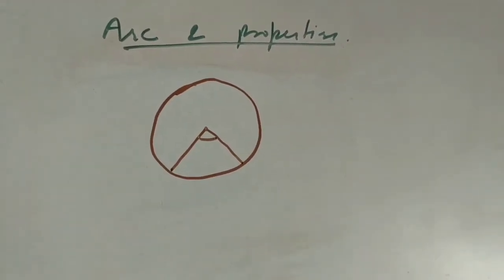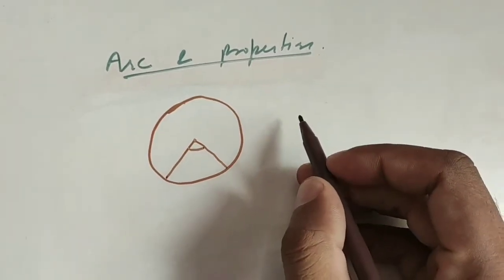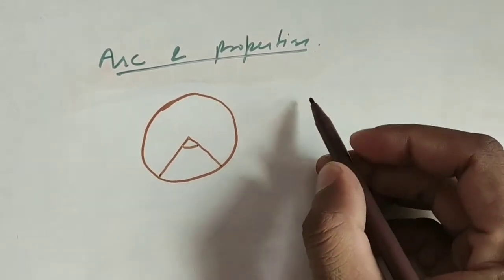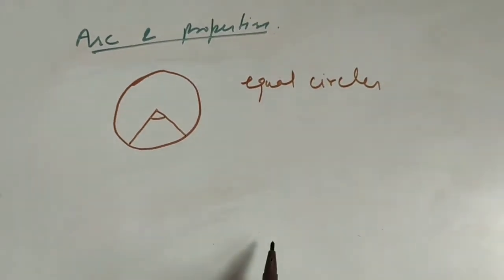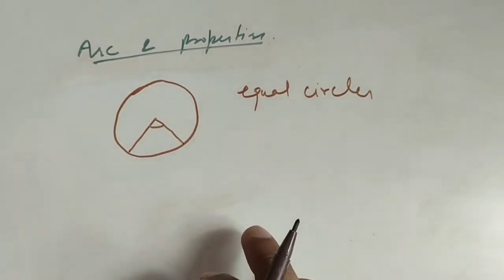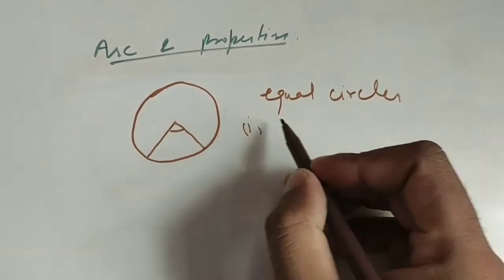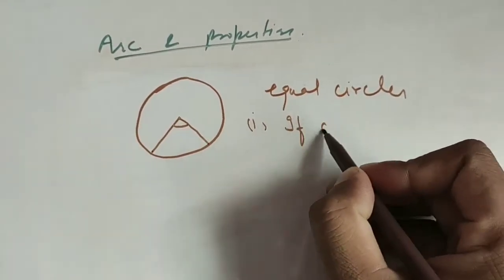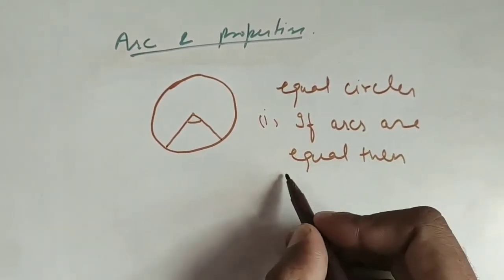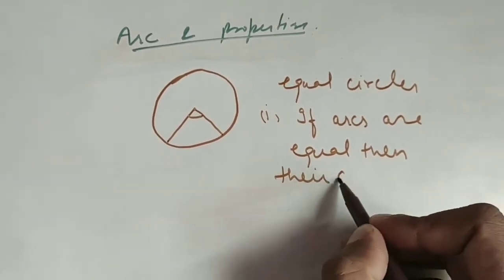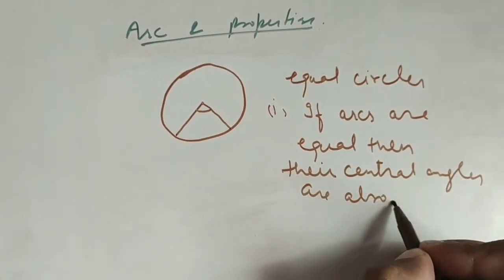Now we will discuss arcs and some properties related with the arcs. Suppose two equal circles are there, then we have to keep in mind a few points related with the arcs. In equal circles, if arcs are equal, then their central angles are also equal.